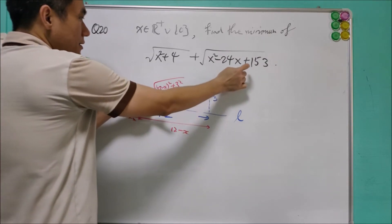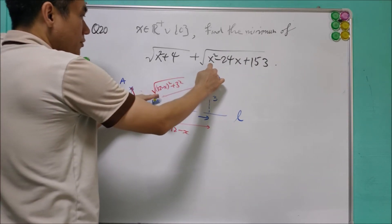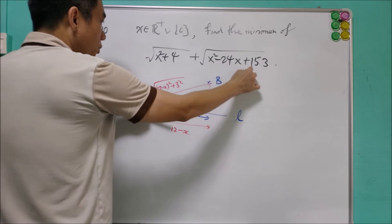And after you expand this, this indeed is equal to square root of x squared minus 24x plus 153.